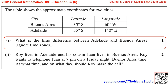Question 25, Part B. The table shows the approximate coordinates for two cities. Buenos Aires has a latitude of 35 degrees south and a longitude of 60 degrees west, and Adelaide has a latitude of 35 degrees south and a longitude of 140 degrees east.